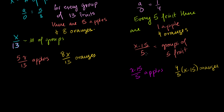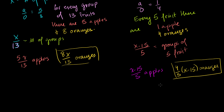What doesn't change? I'm changing the number of apples, but I never changed the number of oranges. So the number of oranges we started off with has to equal the number of oranges we ended up with. There are many ways to do this problem, but this is the straightforward way. So 8x over 13 is equal to 4 fifths times (x minus 15).